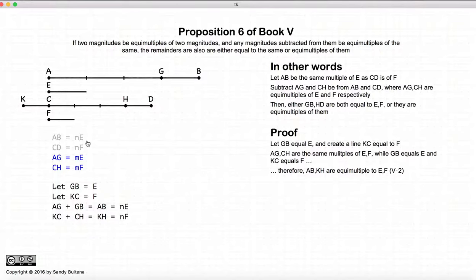But we know that AB is equal to N times E, so KH will still be that multiple of F. So AB and KH are not only equal multiples of E and F, but they are the original multiples of AB.